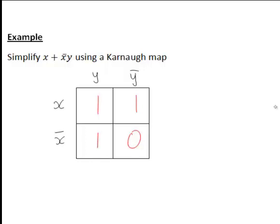And now we look for squares of ones. And if all of the four squares were a one, we would circle all of them and the circuit would just be equal to one. But here, since all four are not one, we look for any two squares of ones.